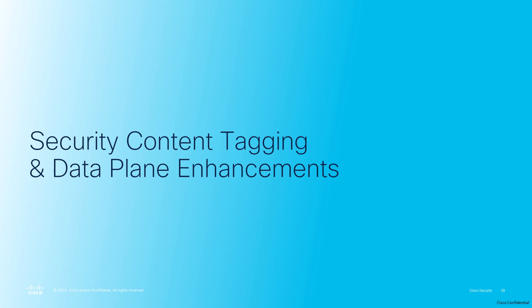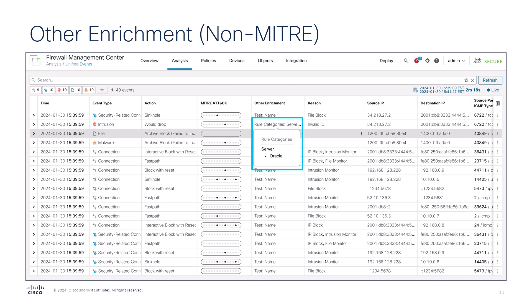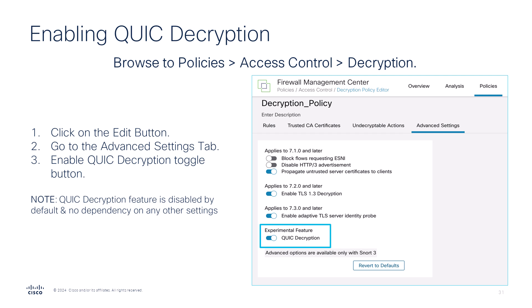At number four, we have Security Content Tagging and Data Plane Enhancements that include updates to the Unified Event Viewer giving it a single pane view for MITRE ATT&CK techniques. Enhancements include a progression graph that visualizes the progress of an attack in the attack framework, a new pane for context enrichment, and a detail link to the MITRE ATT&CK framework for more information. For non-MITRE information, an additional other enrichment column is now available that includes the technique, tactic names, or rule categories for added context. Finally, the one honorable mention for threat and malware is the new experimental feature Quick Decryption, that enables the inspection of QUIC connections on firewall devices and allows for deep packet inspection and policy enforcement on QUIC traffic. The feature is disabled by default, but to test it out, simply go to Policies, Decryption, click Edit on the policy, select Advanced Settings, and click the pill to enable this new feature.